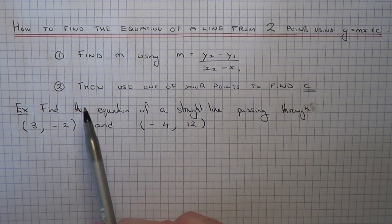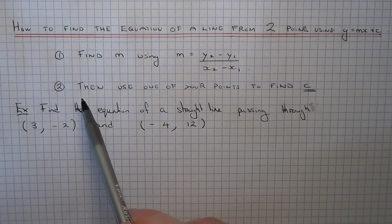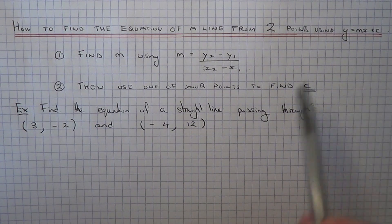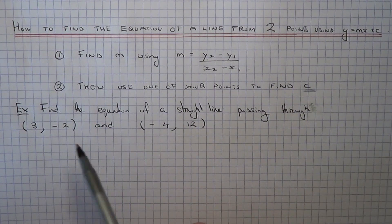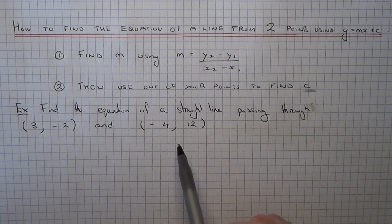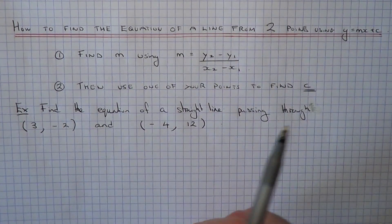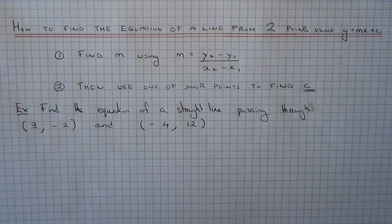And once you've calculated the gradient you then can substitute this gradient into y equals mx plus c and choose one of your points and you should be able to figure out the intercept from that. And then you have the equation of your straight line.